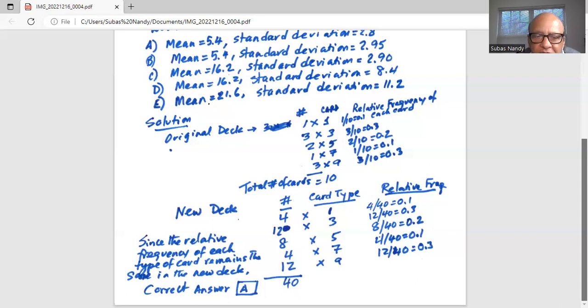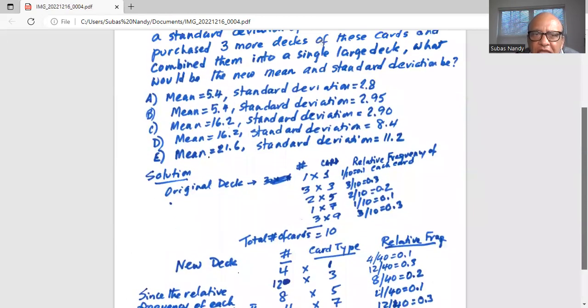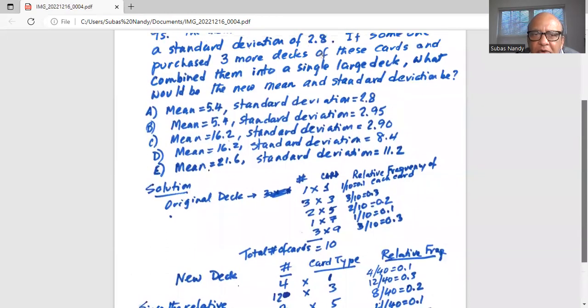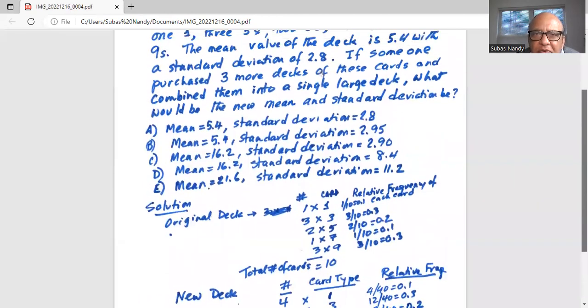Since the relative frequencies of each type of card remain the same in the new deck as in the original deck, the correct answer is answer A, which says mean is 5.4, standard deviation is 2.8, which is the same as the original deck. The reason is the relative frequency of each type of card in the new deck is the same as the relative frequency of each card in the original deck.